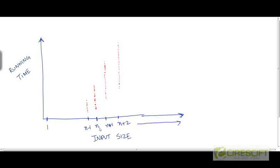We have input sizes n, n-1, and n-2. Notice that for a given input size, say n, you don't see a single value for the running time. Each of these red dots represents one particular input of size n and represents the running time for that particular input of size n.